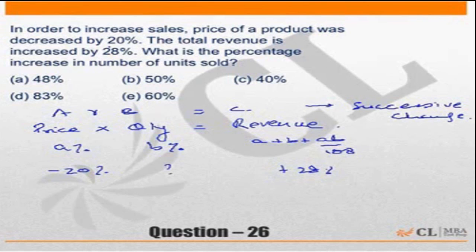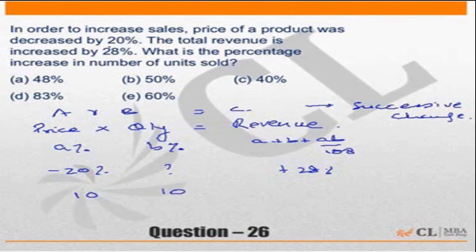Another simple method is to assume that the price and quantity are certain numbers and see what the revenue happens to be. Let's assume the price is 10 and quantity is 10. So when the price was 10 rupees, 10 pieces were sold and hence the revenue was 100.